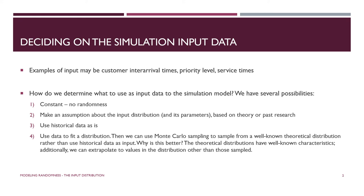Third, you can use historical data. If you have a model that you're simulating and there's a real system version of it, collect data from it. You now have a string of inter-arrival times and can just input that — you don't need to have a distribution when you have the actual data. Finally, and this is really the best way: take the data and use it to fit a theoretical distribution. Once you have the distribution and estimated parameters, you can sample from it and you're not limited to the exact values you collected.